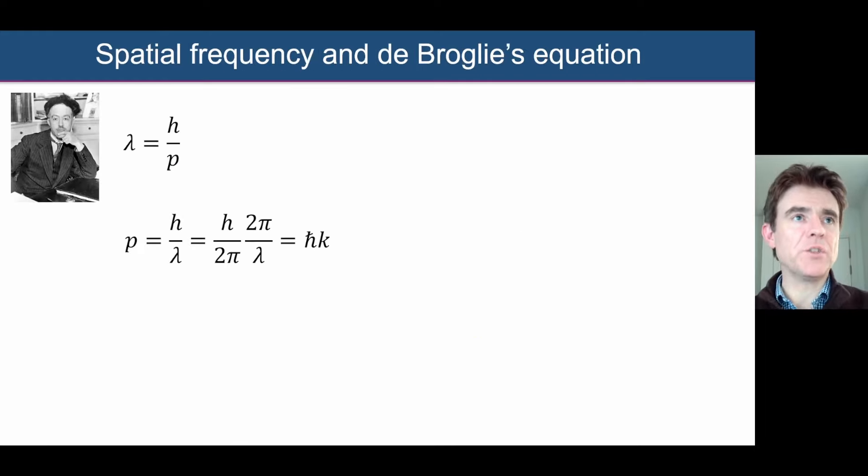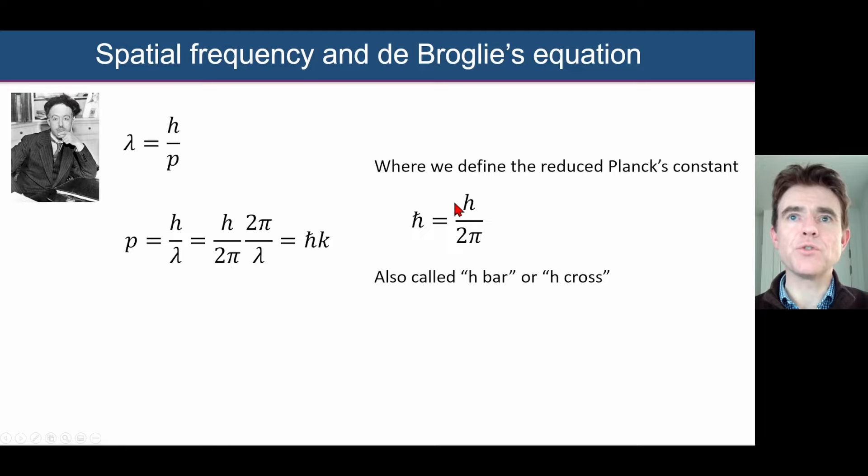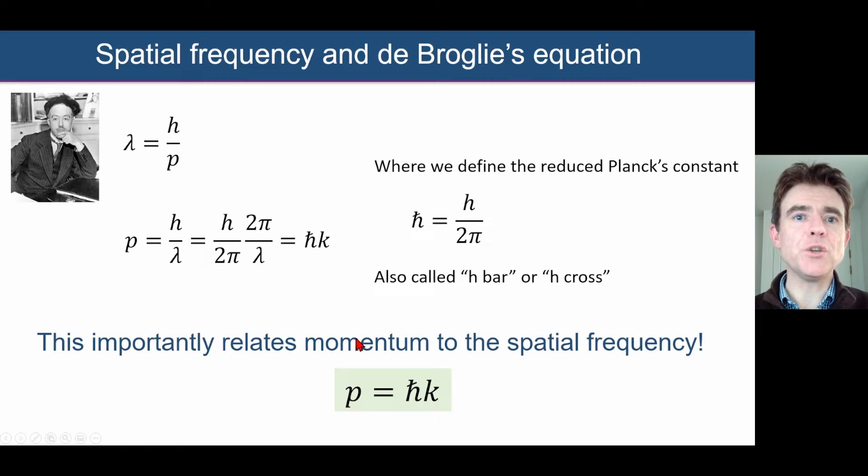Let's get back then to Louis de Broglie's equation. Lambda is h over p. In other words, p equals h over lambda. Now here, to make use of that angular wave number K, 2π over lambda, I'm now going to divide h by 2π, and I'm going to label h divided by 2π as the reduced Planck's constant, which we can call h bar or h cross, and therefore we've got momentum p is equal to h cross K. So the momentum of the electron is proportional to the angular wave number, or the spatial frequency, by making use in particular of this h cross constant.